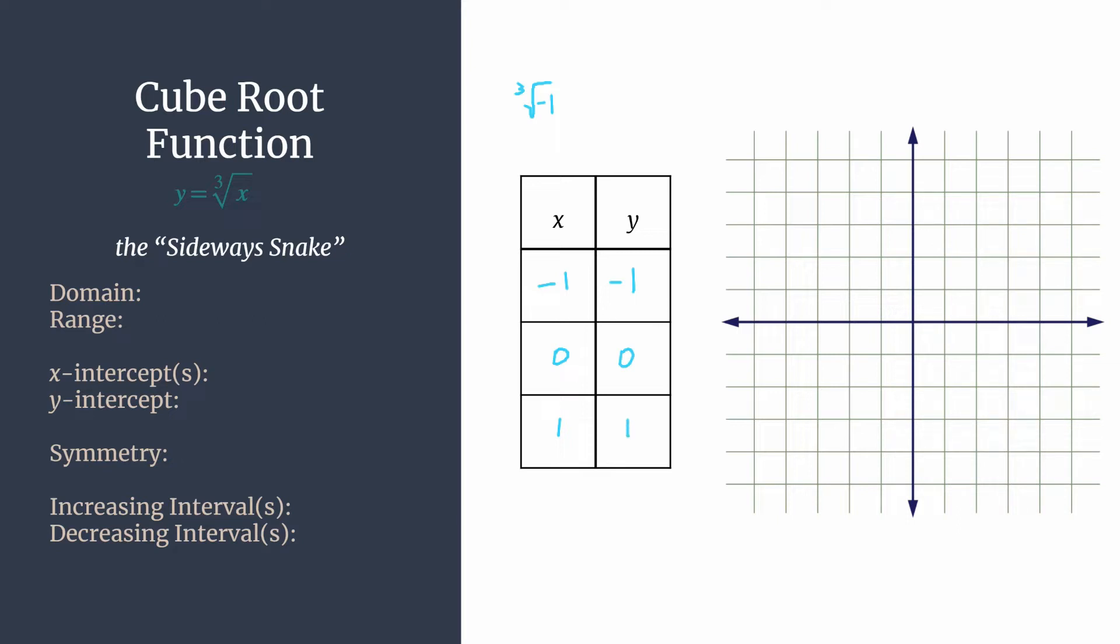So let's go ahead and plot these points. We have negative one, negative one, zero, zero, and one, one. So hopefully now you're thinking, well, gosh, that looks a lot like the cube function, how am I supposed to know the difference?